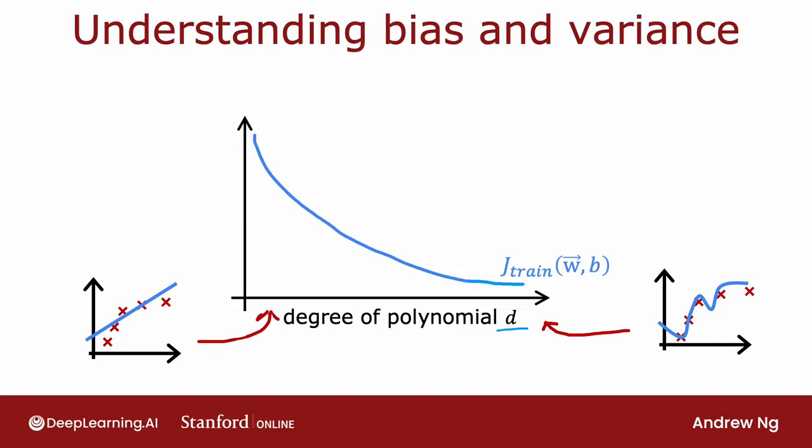Now let's look at J_CV — how well does it do on data that it did not get to fit to? When D equals 1 and the degree of polynomial is very low, J_CV was pretty high because it underfit — it didn't do well on the cross-validation set. And on the right, when the degree of polynomial is very large, say four, it doesn't do well on the cross-validation set either. So J_CV is also high.